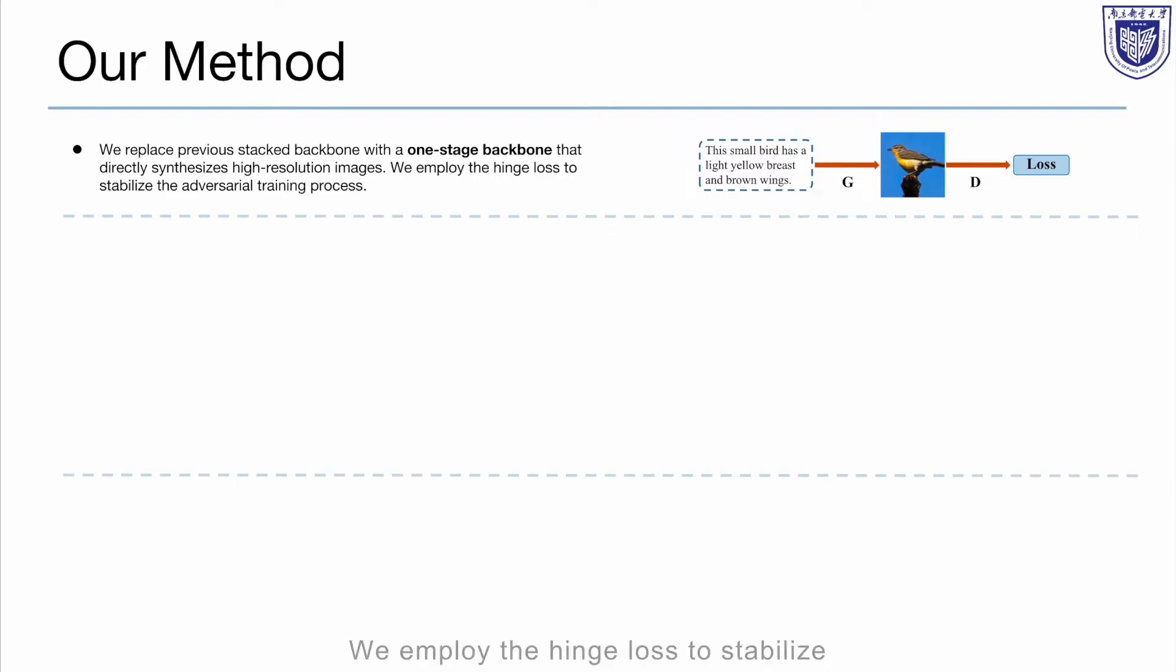We employ the hinge loss to stabilize the adversarial training process. Since there is only one pair of generator and discriminator in our one-stage backbone, it avoids overlapped supervisions during adversarial training and enables our network to synthesize more realistic images.